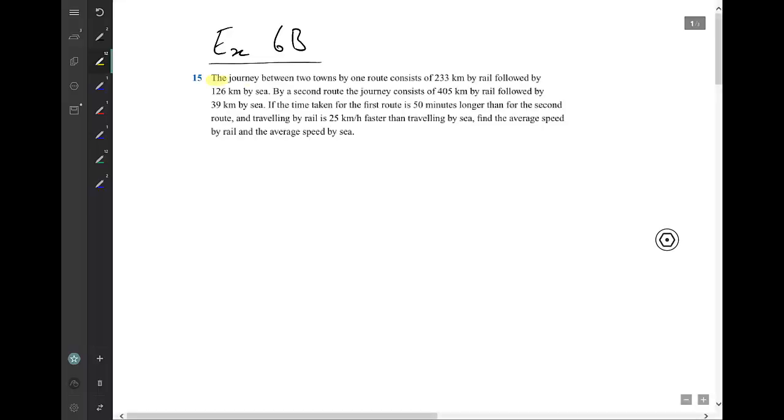Let's go ahead and highlight the key information and try to draw a diagram. We have here a journey between two towns of 233 by rail followed by 126 by sea. So straight away, let me call this T1 for town 1, T2 for town 2. And I have my rail journey and I have my sea journey.